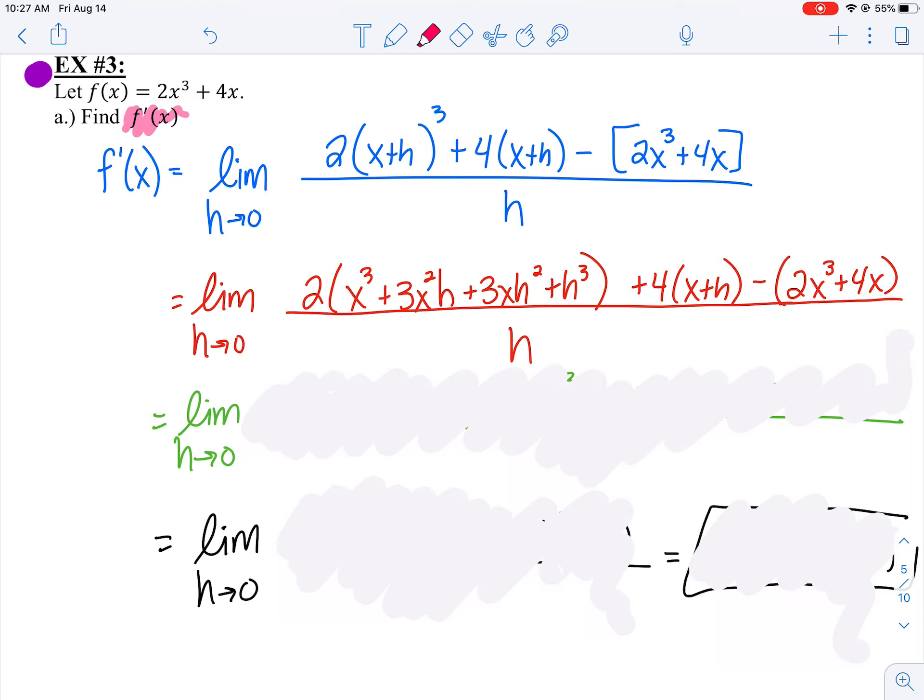When you foiled, you should have gotten x³ + 3x²h + 3xh² + h³. Remember, like terms have to have the same exact variables and exponents to add them together. After foiling three times, you should have ended up getting this.